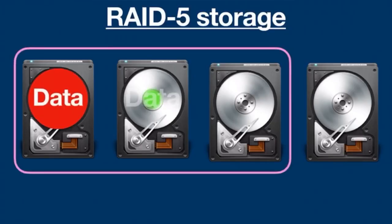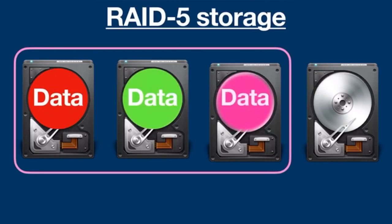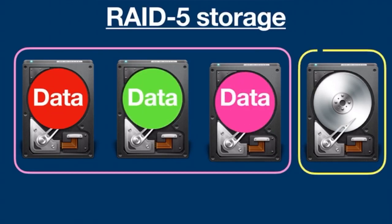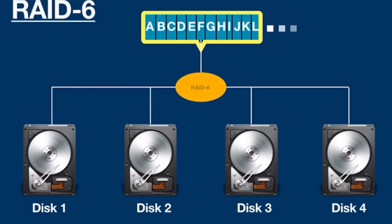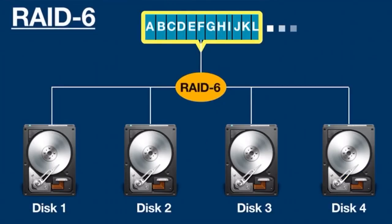RAID 5 is best for file storage servers. In a RAID 5 setup with three drives, two drives are used to store actual data and one drive is used to store parity.